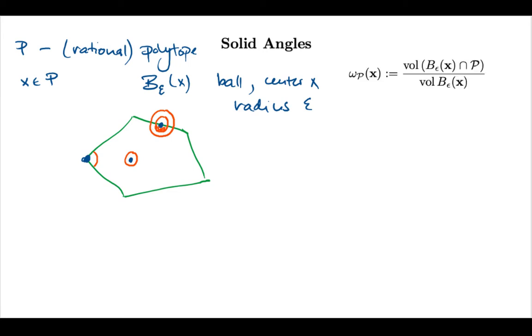And so here's the definition of a solid angle in general dimension. We'll measure the portion of this ball that's inside of P and of course we're measuring volume here normalized to the volume of the ball. And again if ε is small enough this quantity does not depend on the radius ε and this makes this definition well defined.